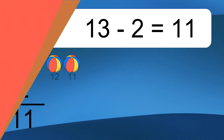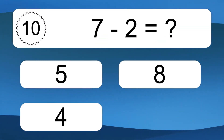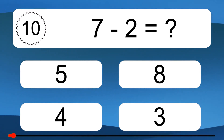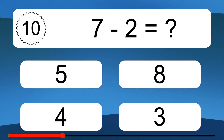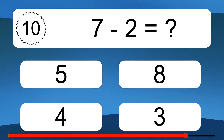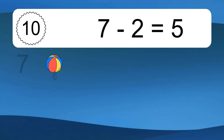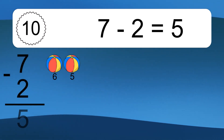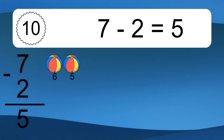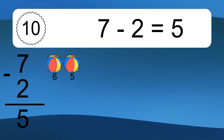7 minus 2 equals what? 7 minus 2 equals 5. Let's count it: 6, 5.